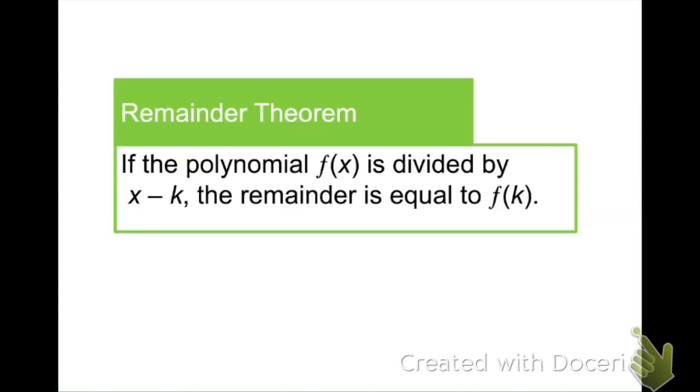Now let's talk about the remainder theorem. The remainder theorem says that if the polynomial f of x is divided by x minus k, the remainder is equal to f of k. So what that means is I could have gotten that remainder of negative 10 by just plugging in my negative 2 to the equation. That's another way to do it.